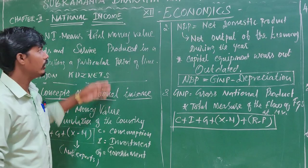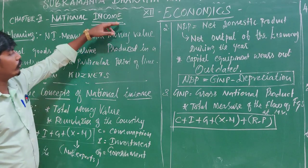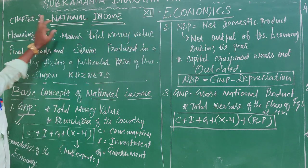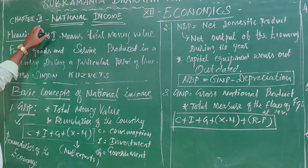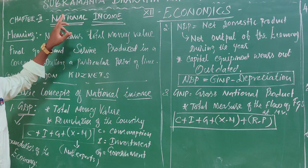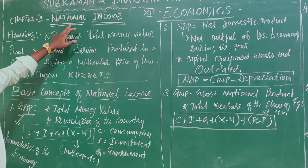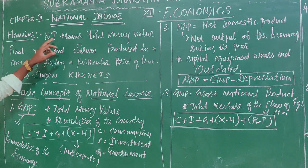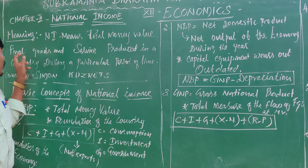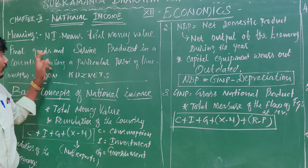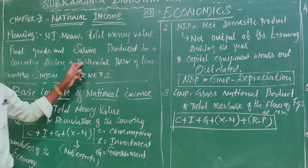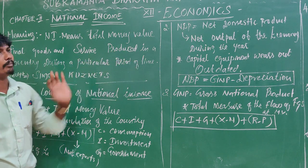Happy morning students. Today we go to the subject 12th standard economics, chapter 2: national income. National income means the total money value of final goods and services produced in a country during a particular period of time.